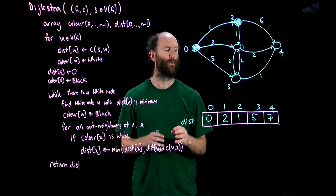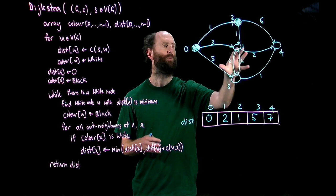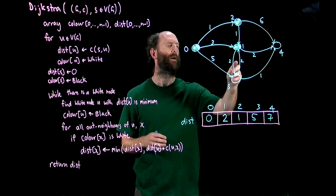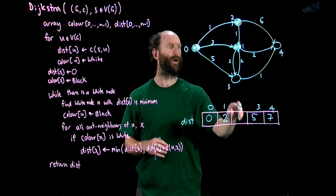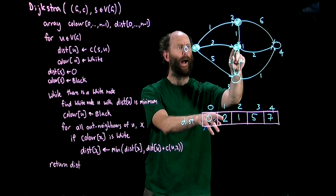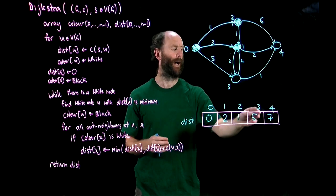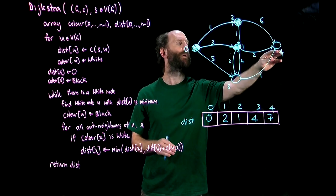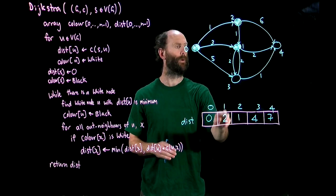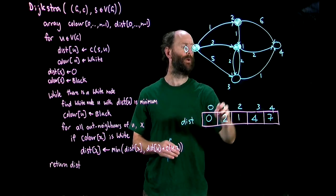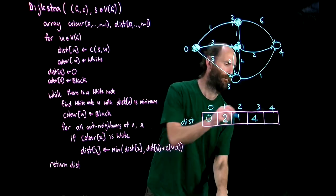We'll look for another white node the one with the lowest dist which will be one. We'll add one to the black set and then we'll look at its out neighbors. So one has out neighbors three and four. Let's look at three first. So the current distance to three is five, the distance to one is two and then there's an arc going from one to three of cost two. Two plus two is four which is less than five so we'll update that. Now let's look at out neighbor four. Currently the distance to four is seven whereas the dist to one is two and the cost of this arc is two. Two plus two is four which is less than seven so again we can update this entry to be four. We're now done with one.